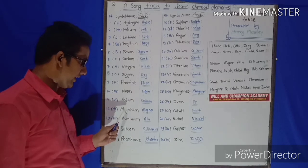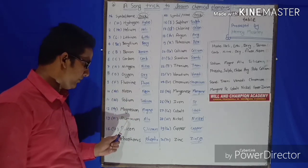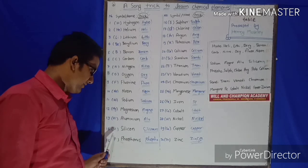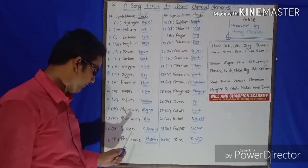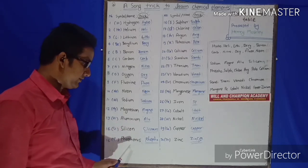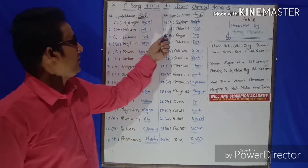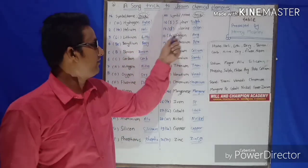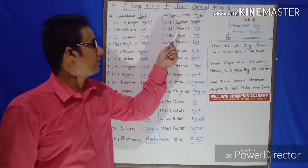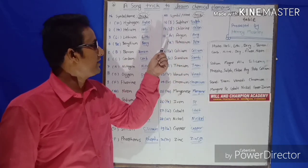Mg stands for Magnesium, say Magne. Al stands for Aluminum, say Alu. Si stands for Silicon, say Silicum. P stands for Phosphorus, say Phospho. S stands for Sulfur, say Sulfu. Cl stands for Chlorine, say Chlori. Ar stands for Argon, say Argo.